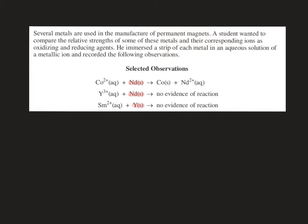I'm going to do the same thing with our oxidizing agents. Metal cations are typically oxidizing agents, so cobalt 2 plus, yttrium 3 plus, and samarium 2 plus are our oxidizing agents.